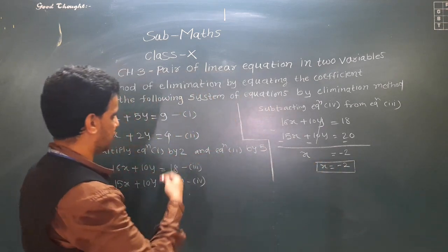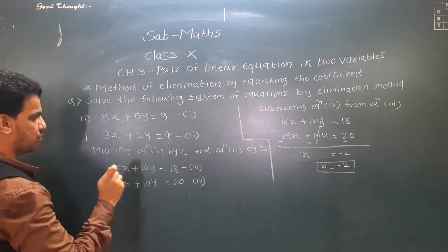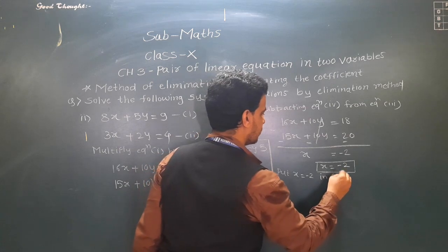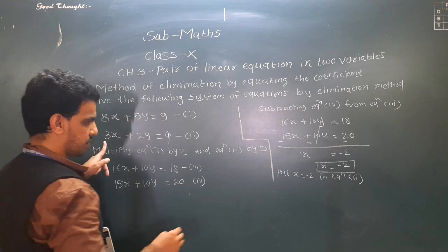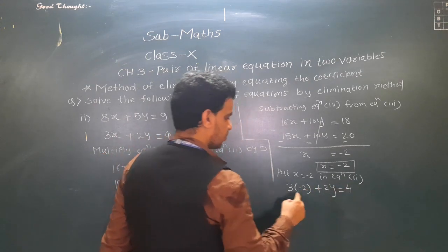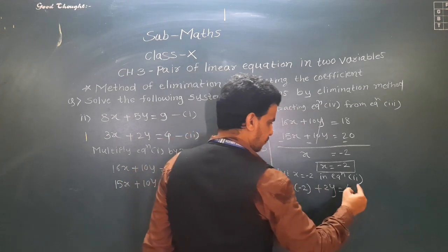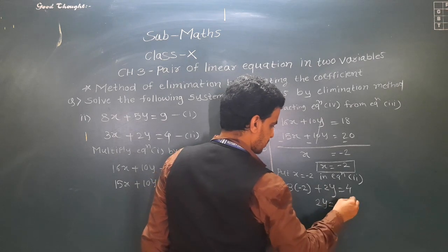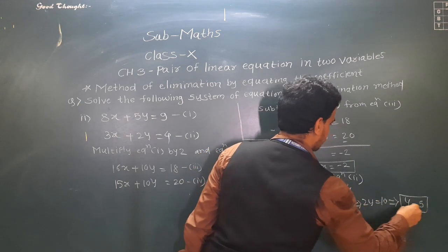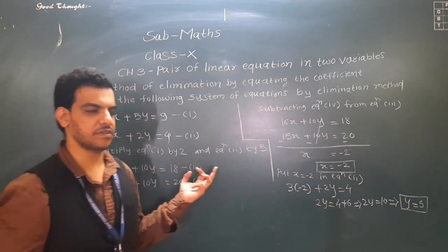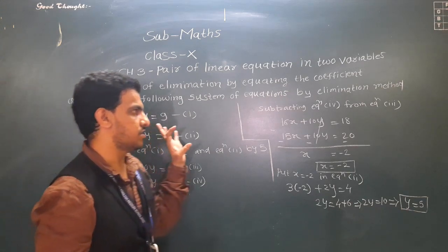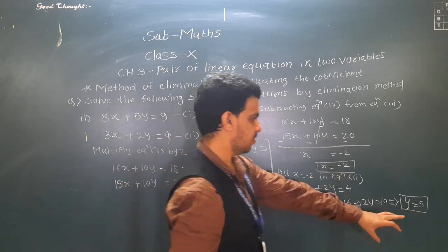Now we substitute x = −2 into equation 2: 3(−2) + 2y = 4, so −6 + 2y = 4, which gives 2y = 4 + 6 = 10, so y = 5. The solution to this system is x = −2 and y = 5. This solution satisfies both equations.